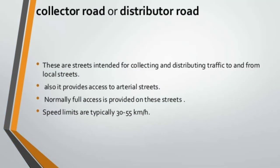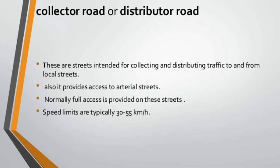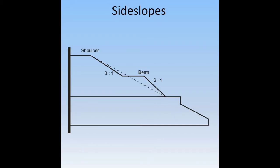Collector roads, also called distributor roads, are streets intended for collecting and distributing traffic to and from local streets. They also provide access to arterial streets. Normally full access is provided to these streets, and speed limits are typically 30 to 55 kilometers per hour.